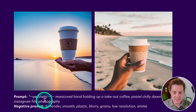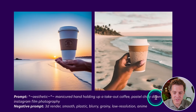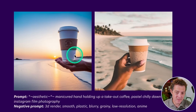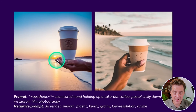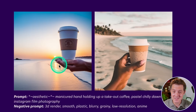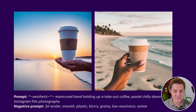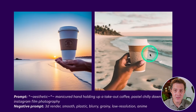Here's another one: an aesthetic, manicured hand holding up a takeout coffee, pastel, Chile, dawn, beach, Instagram film photography. The left one looks really good, but you can tell there are lots of fingers — many more than humans have. AI generative art has always struggled with hands. Midjourney's new version has really solved it, and now it looks like SDXL 0.9 has solved it as well. This hand looks flawless.